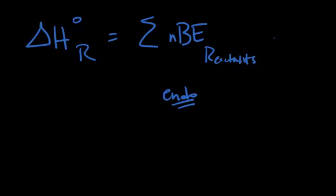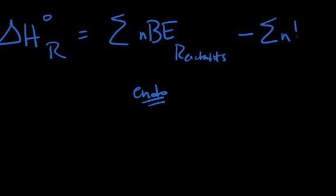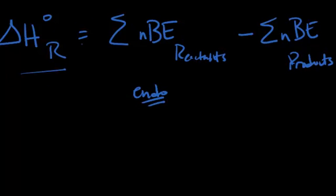If we want to add to that the bond energy of all the products — because the products are exothermic — then the change in enthalpy of the reaction is equal to the summation of all the bond energies of the reactants minus the summation of the bond energies of the products. This way we sum up all the bond energies read right off the table as positive values, and subtracting that summation is the same as adding the negative, which is what we need.